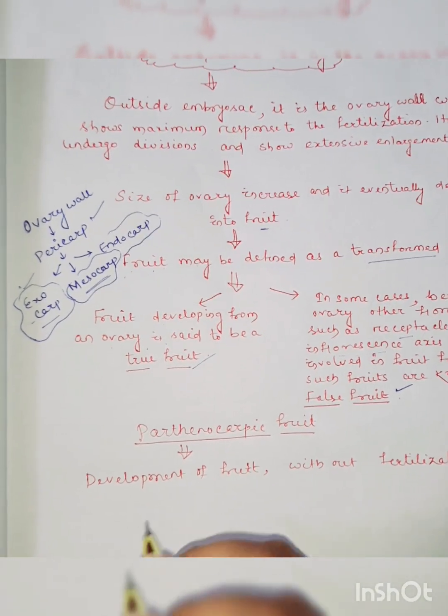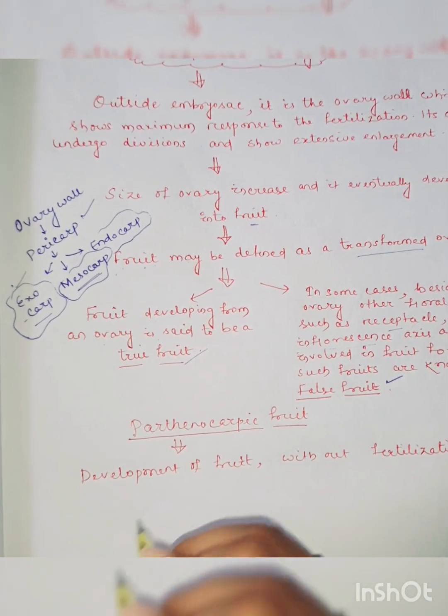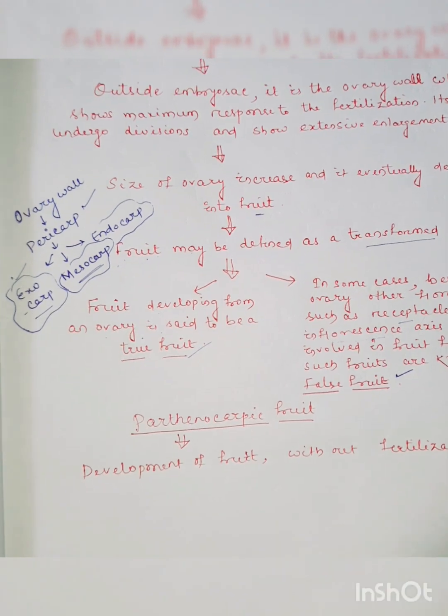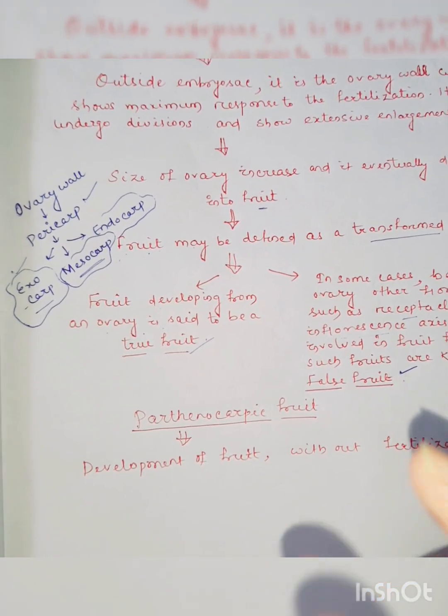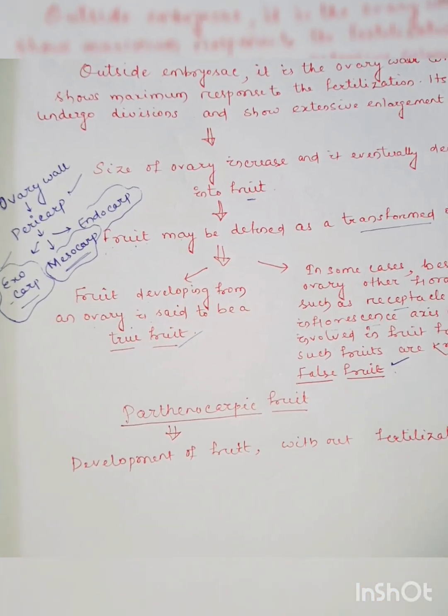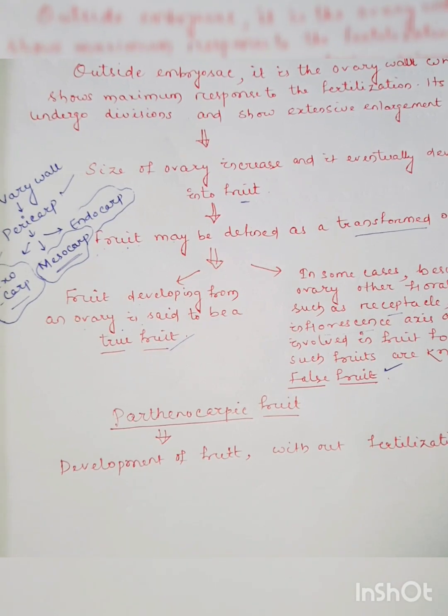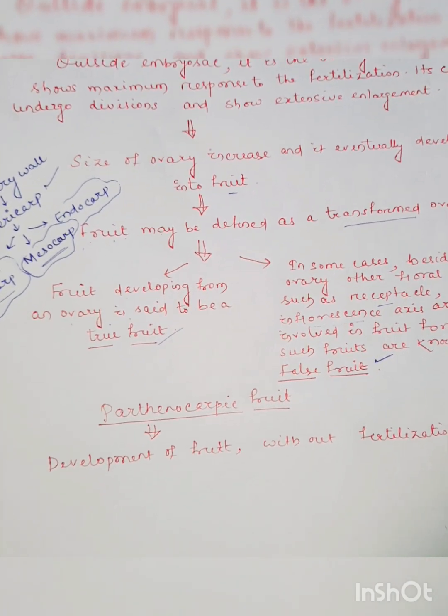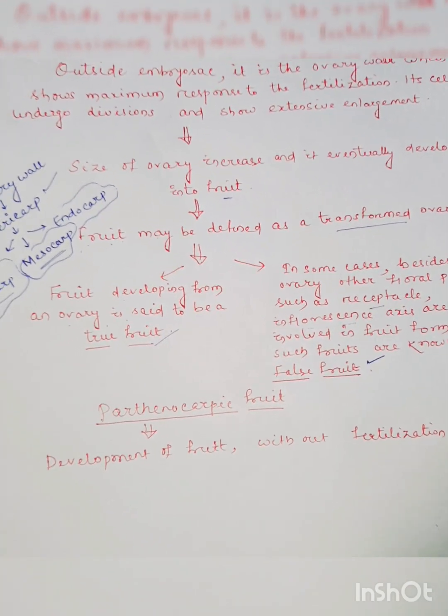Such fruits are called as parthenocarpic fruit and this phenomenon is called parthenocarpy. That means development of fruit without fertilization. These are not normal fruits.